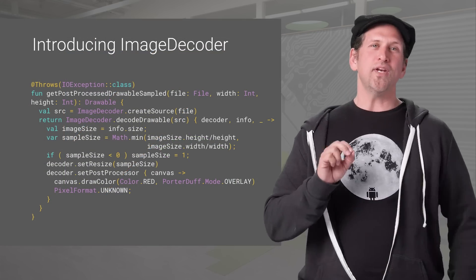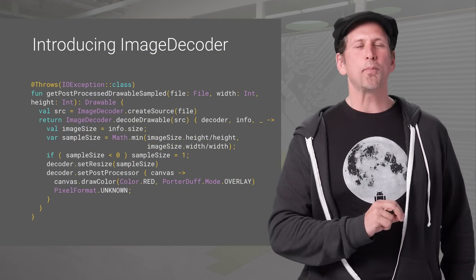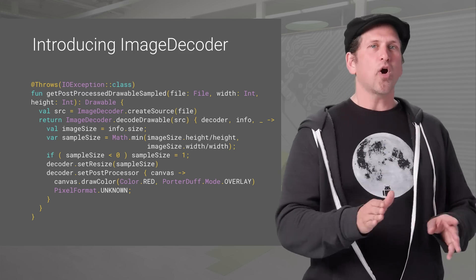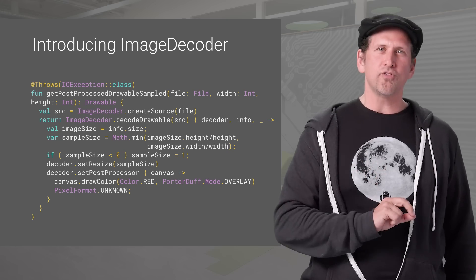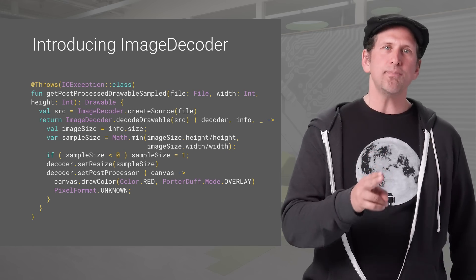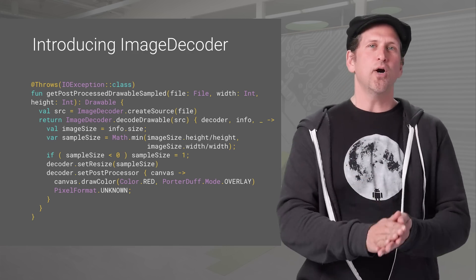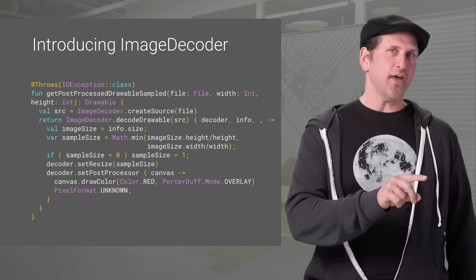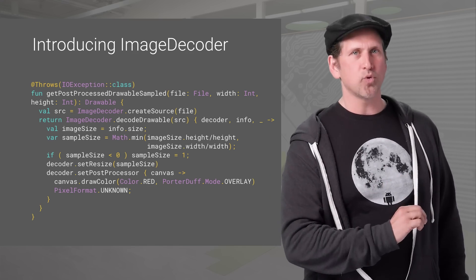Android introduces an easier way to decode images to either bitmaps or drawables with ImageDecoder, which replaces BitmapFactory. ImageDecoder lets you create a bitmap or drawable from a byte buffer, file, or URI. It offers several advantages over BitmapFactory, including support for exact scaling, single-step decoding to hardware memory, support for post-processing in decode, and decoding of animated images. ImageDecoder allows you to supply a callback that is called after the header is decoded, where you can alter the output rather than having to decode the header twice.